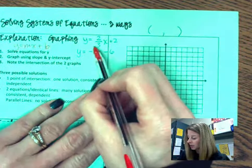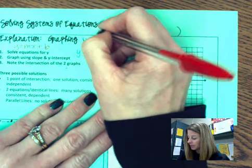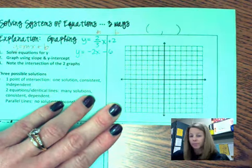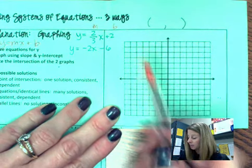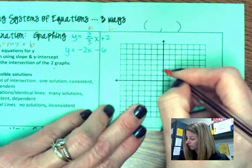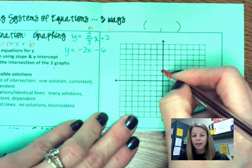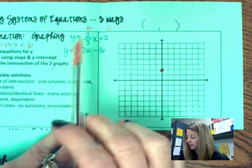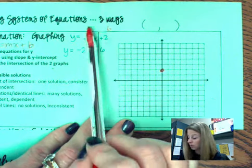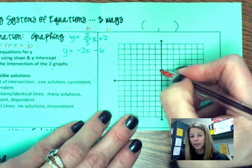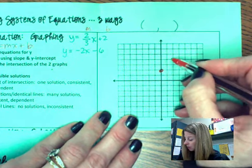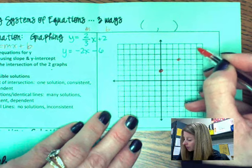Equation number one, remember the m is next to the x. The b is your y-intercept. You always begin with the b. So I'm going to start at positive two on the y-axis. And then my slope, I'm doing rise over run, up two over three. Put your pencil back on the y-intercept, and I'm going to go up two over three, up two over three.